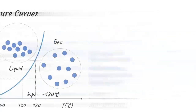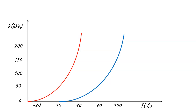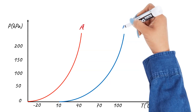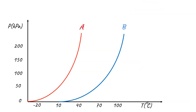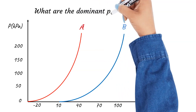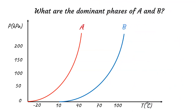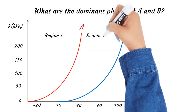Next, let's use vapor pressure curves of two substances, A and B, to devise a strategy to separate them from each other. The red curve represents the vapor pressure curve for substance A, and the blue curve represents that for substance B. Let's start by determining the phases of substances A and B in the three regions: 1, 2, and 3.